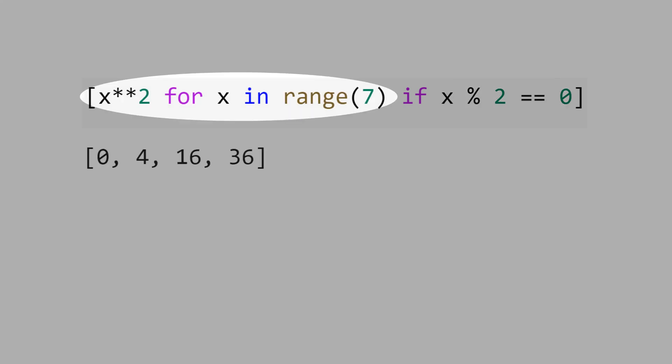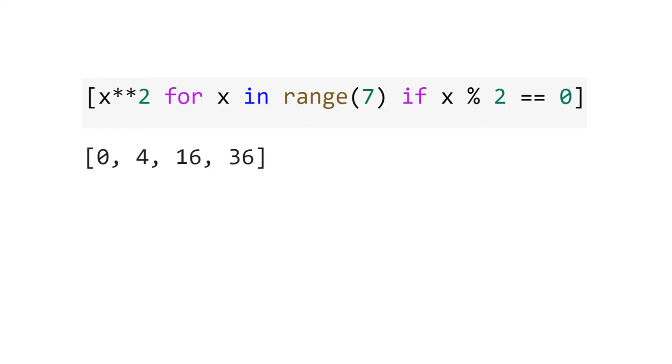This part is the same. For x in range 7, x power 2. And here is the result. You only have the even numbers. We don't have 1, 9, and 25.